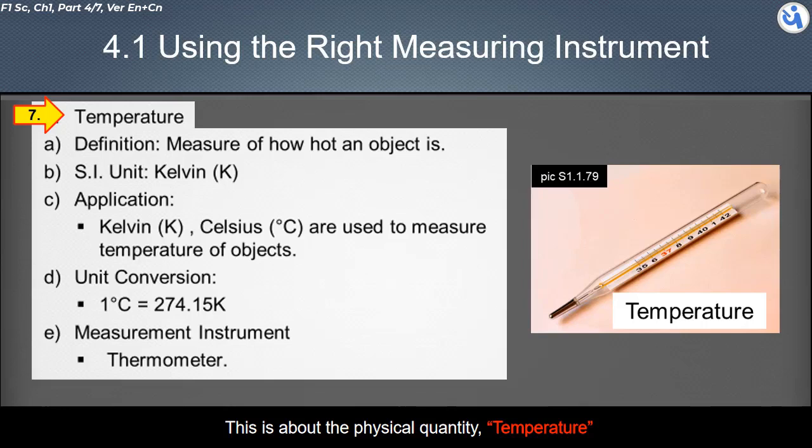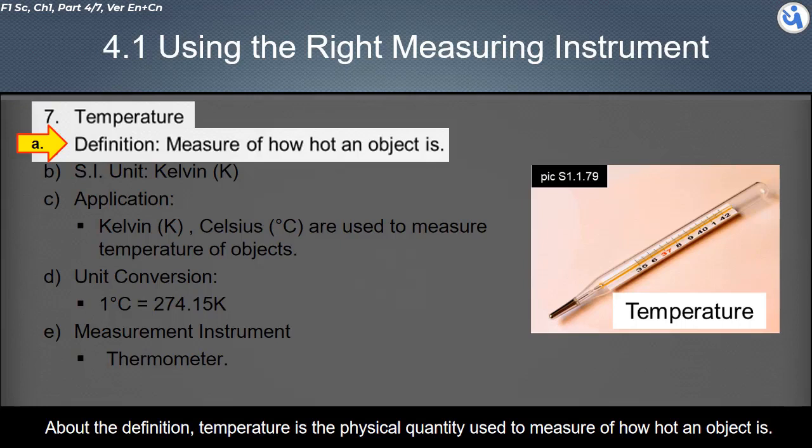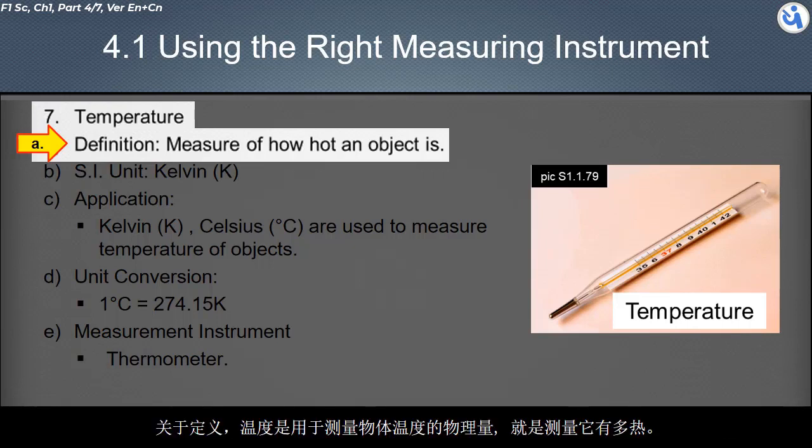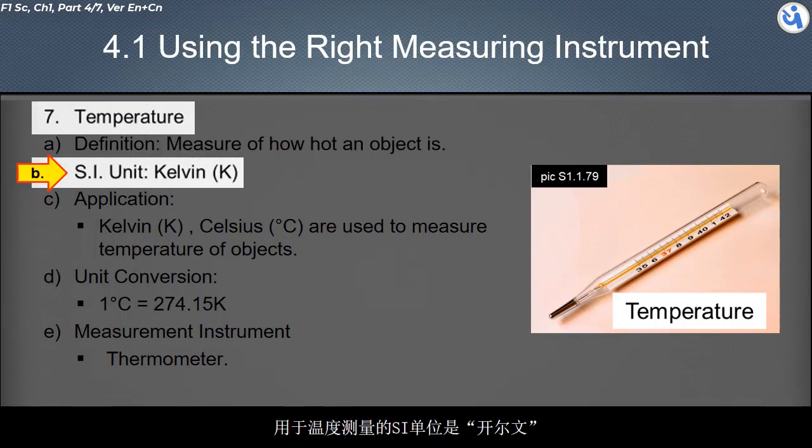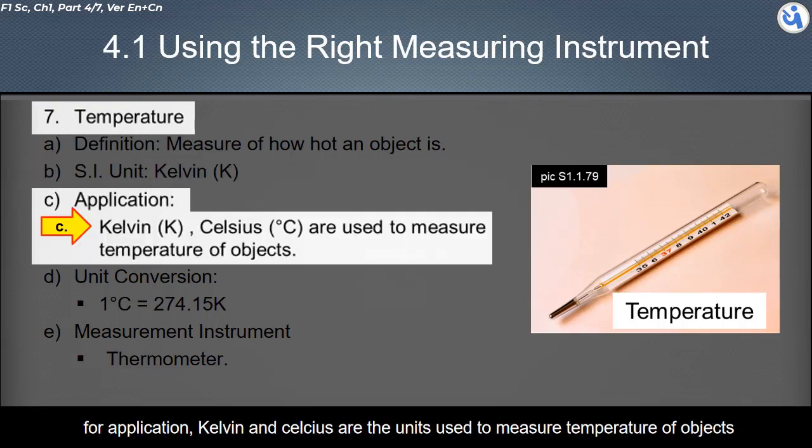This is about the physical quantity temperature. About the definition, temperature is the physical quantity used to measure of how hot an object is. The SI unit that used for temperature measurement is Kelvin. For application, Kelvin and Celsius are the units used to measure temperature of objects.